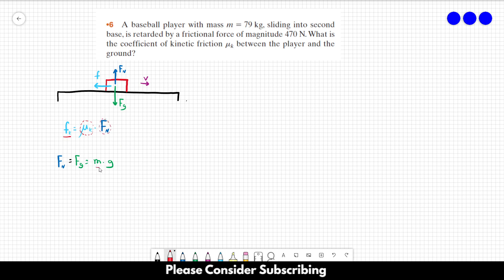So let's just replace the normal force by m times g. So the frictional force is equal to μ_k times m times g. And the only thing that we have to do is to isolate μ_k. So μ_k is equal to the frictional force divided by m times g.